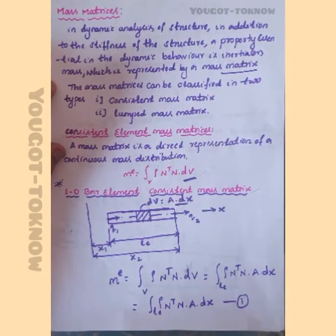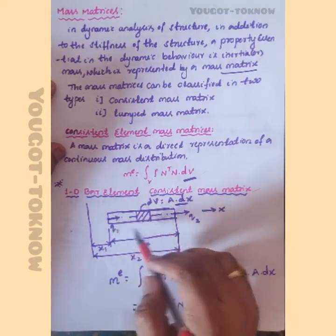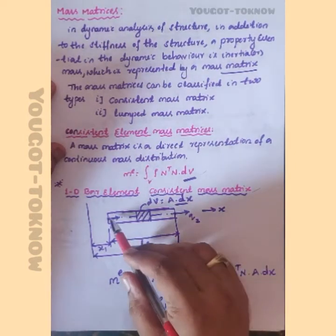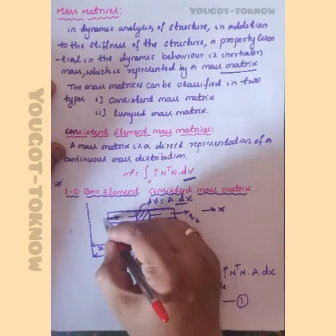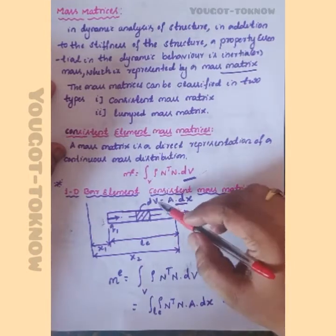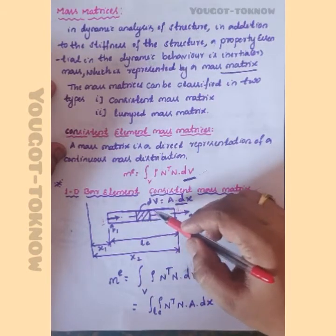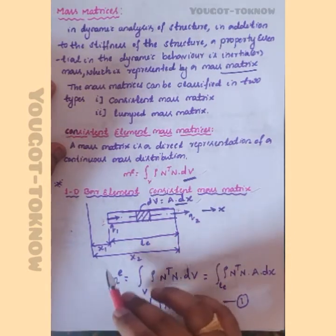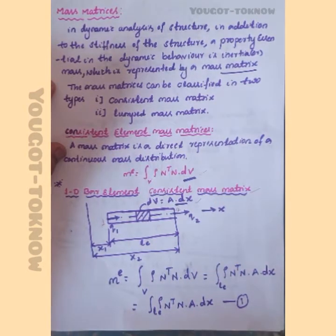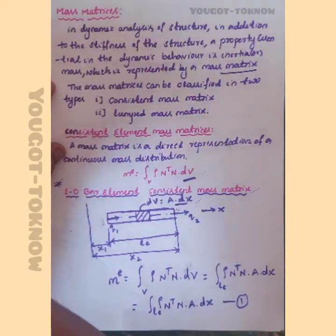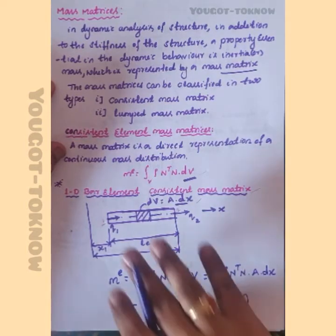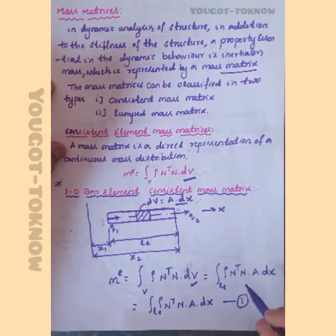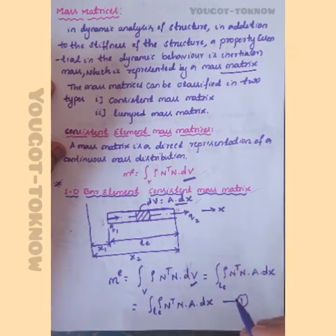What is the consistent mass matrix for a bar element? For a bar element, we have displacement q1 and q2 at each node — node 1 has q1 and node 2 has q2. The volume element dV equals area A times dx. The mass matrix equation becomes: Me equals the integral over the length of rho times N-transpose times N times A times dx.